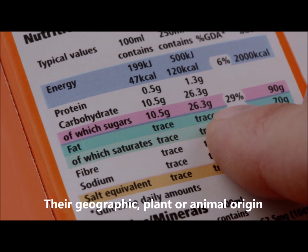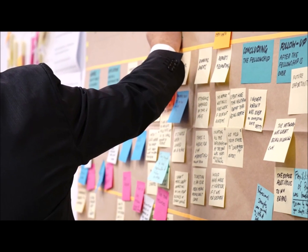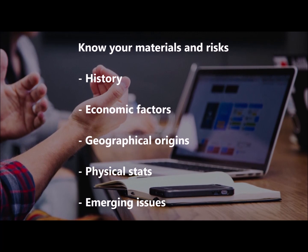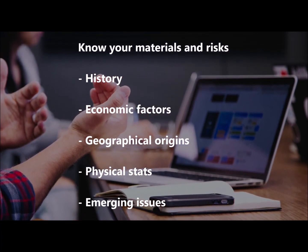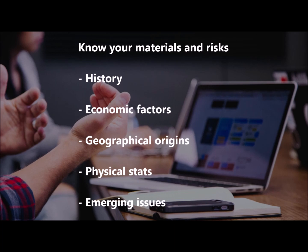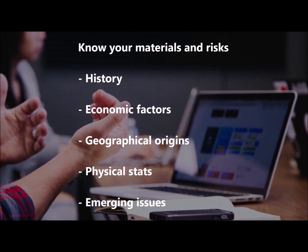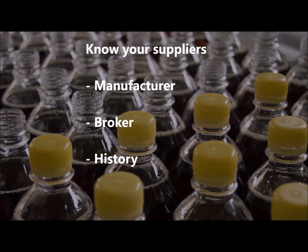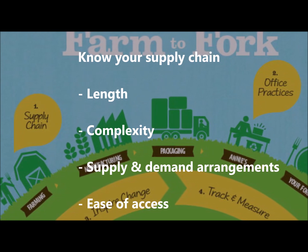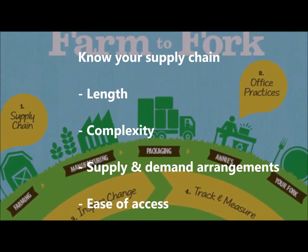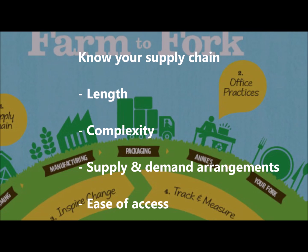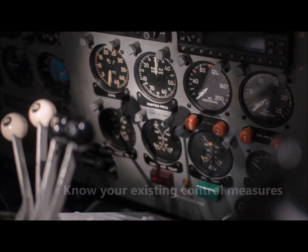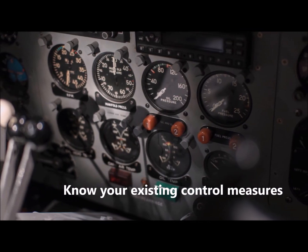A general approach to prevent food fraud can be summarized as follows. Step 1: Conduct vulnerability assessment, including knowing your materials and risks — history, economic factors, geographical origins, physical state, and emerging issues — knowing your suppliers, manufacturer, broker, and history; knowing your supply chain — length, complexity, supply and demand arrangements, and ease of access; and knowing your existing control measures.